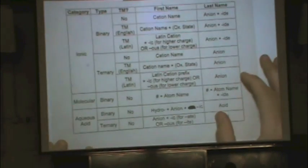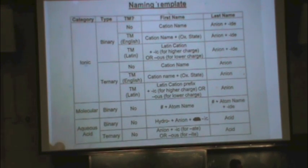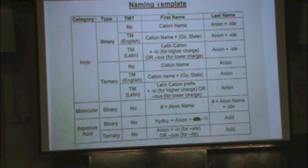You're wondering, how the heck do I remember how to name all of these? And what is the naming system? It's worse than you think. I don't know what it is. This is in your reader. This is what's in my brain. This is how I do it. And to come up with a different system, that's totally fine. Here's our three categories. Ionic, molecular, and aqueous acid.